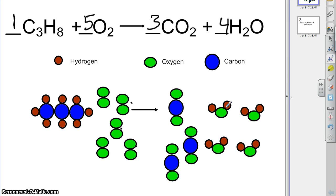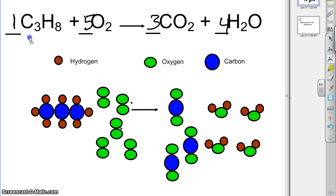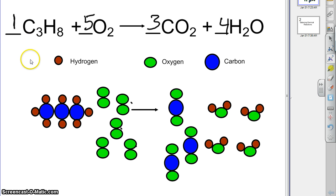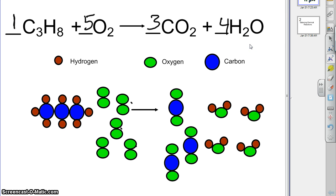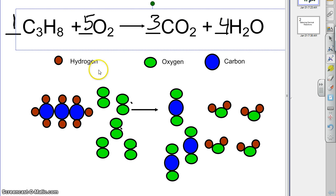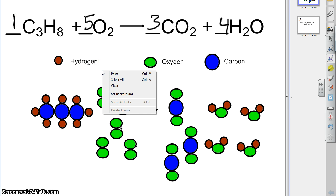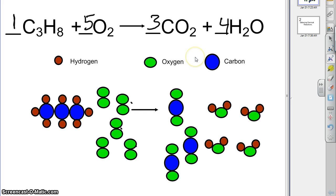And so now we're balanced. If we check it: on the left we have three carbons — three times one is three — and on the right we have three carbons. On the left we have eight hydrogens — eight times one — and on the right we have four times two, which is eight. So everything before and after the arrow has to equal, and so far they do. Now let's check the oxygens: five times two is ten. And on the right, three times two is six, but there are four more from the water, so six plus four is ten. And so these are balanced.